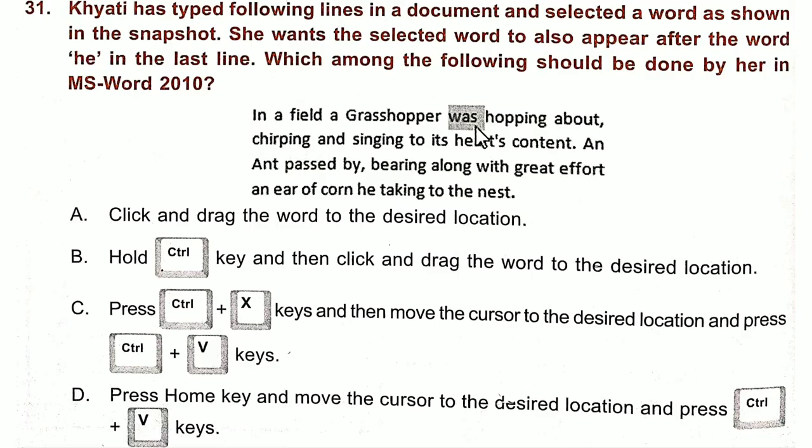Question 31. In the snapshot, she wants the selected word to also appear after the word 'he' in the last line. Which among the following should be done by her in MS Word 2010? Answer is option B.